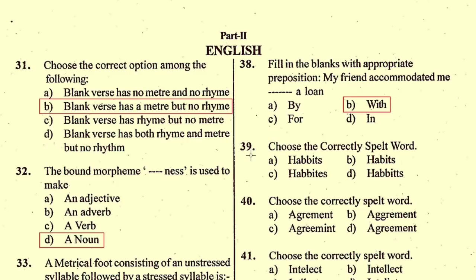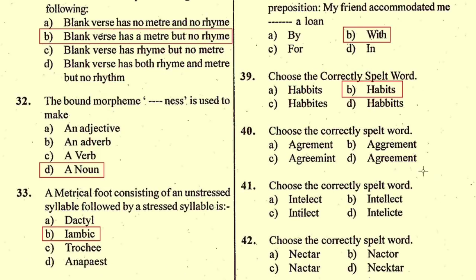Question number 39: Choose the correctly spelt word. The correctly spelt word is given in option B — 'habits', H-A-B-I-T-S. Question number 40: Choose the correctly spelt word. The correctly spelt word is given in option D — 'agreement', A-G-R-E-E-M-E-N-T.